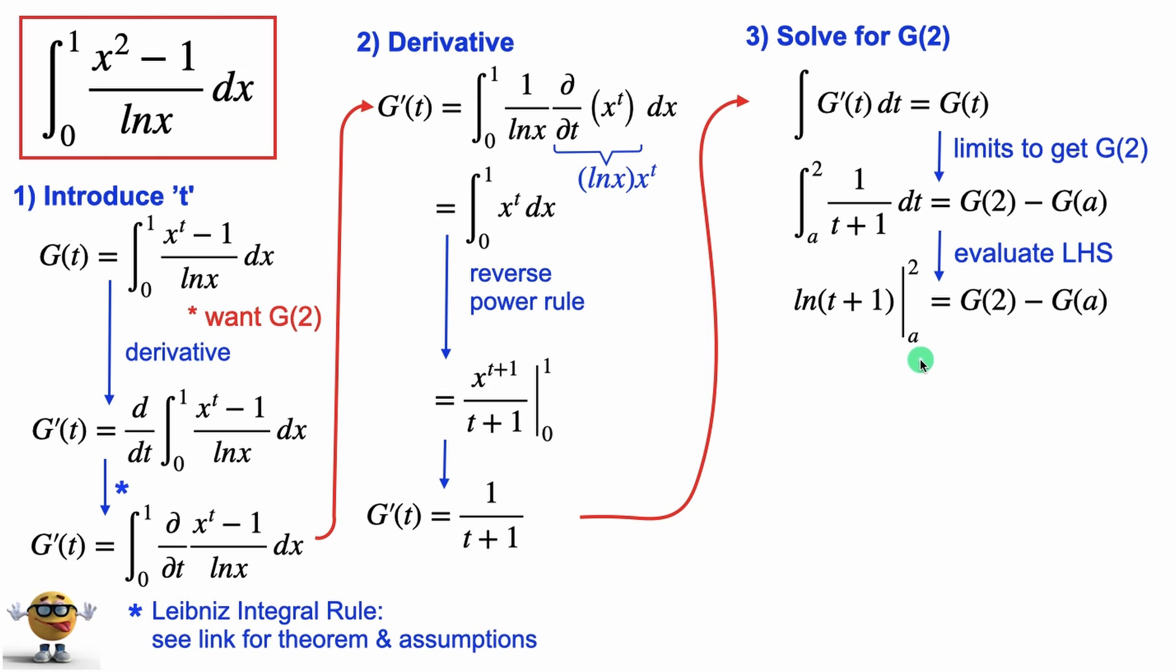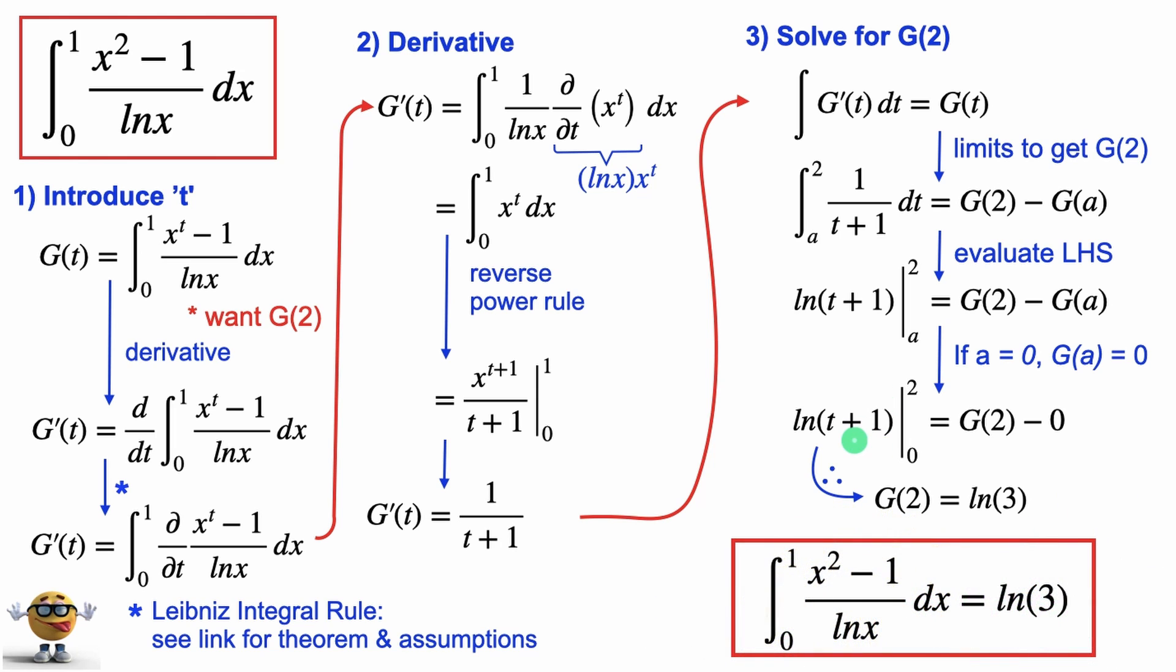If we can put in any number, let's choose a to be 0, because if a is 0, then we plug in 0 for t right here—that's ln of 1. ln of 1 is 0, so g of a is 0 if a is 0. That means g of 2 is going to be ln of t plus 1, evaluated from 0 to 2, minus 0. Therefore, g of 2 equals ln of 3, and my friends, that's our integral in all its glory.